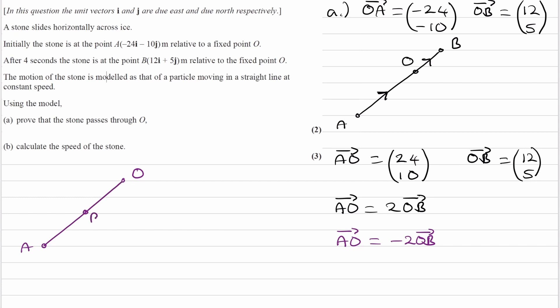B would be somewhere over here. AO would be this vector here that takes us from there to there. OB would be this vector that takes us from O to B.